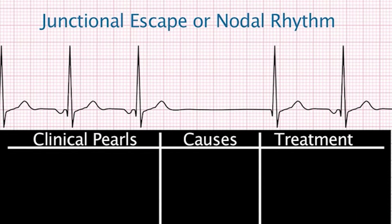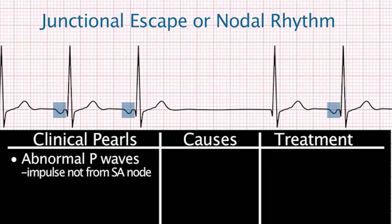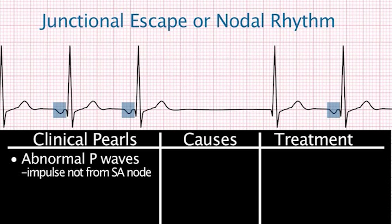Junctional escape or nodal rhythms: the rhythm looks like sinus rhythm but with an abnormal P wave. When the P wave does not look like a sinus P wave, the impulse is not originating in the SA node. The P wave is usually inverted, and it may occur before, during, or after the QRS complex.